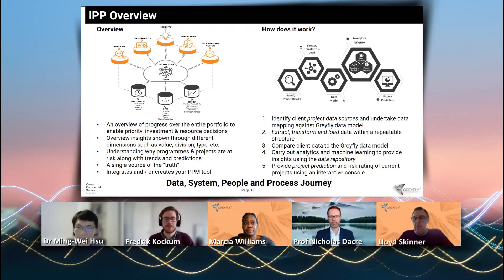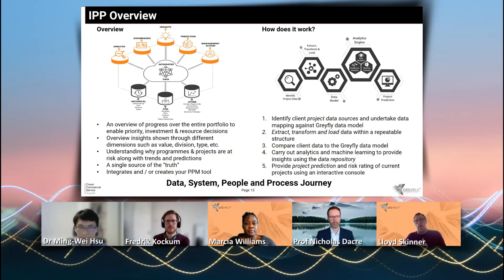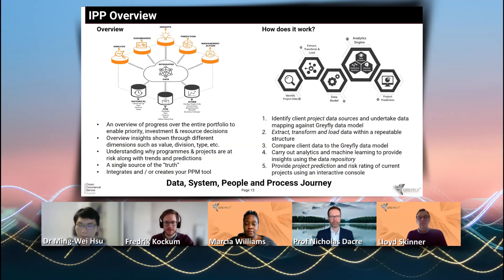Just to reiterate this point about the journey and the maturity capability of an organization - what we're finding with our clients is that the data is in a poor state, and some of these clients you would expect to be more mature than they actually are. For example, one large client has no resource management system in place. On the basis that resource management is a key element of project success, what we're doing with those clients is working out what their plan is for implementing a resource management system. Once that's implemented and starts generating data, we can then bring that into the data model in the future.